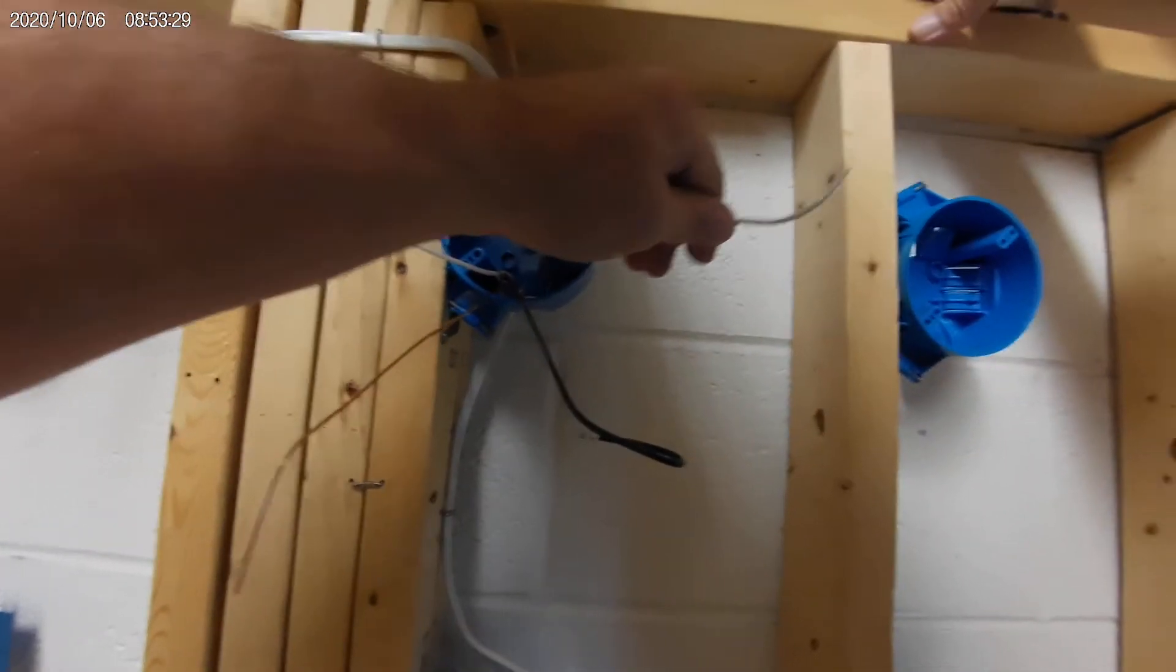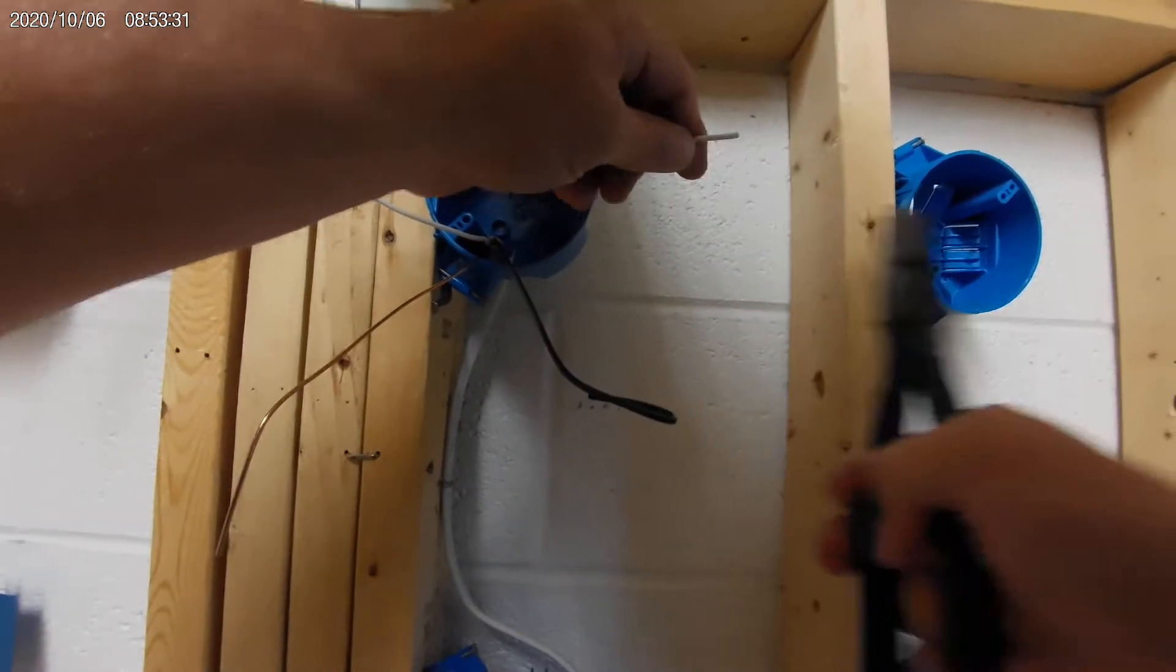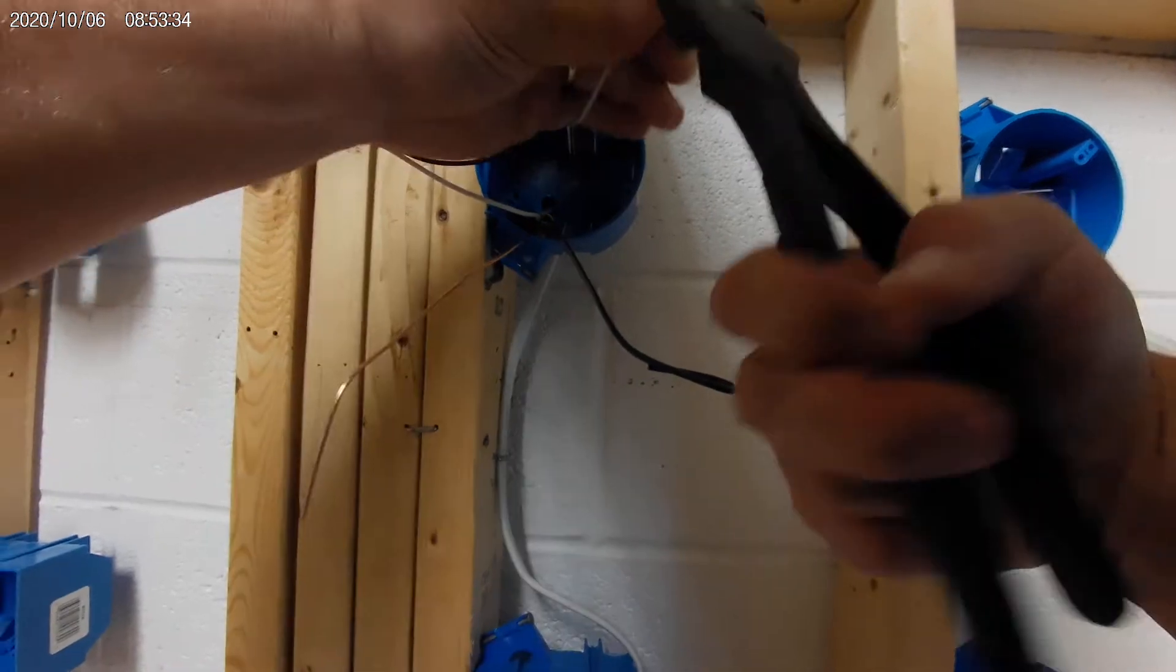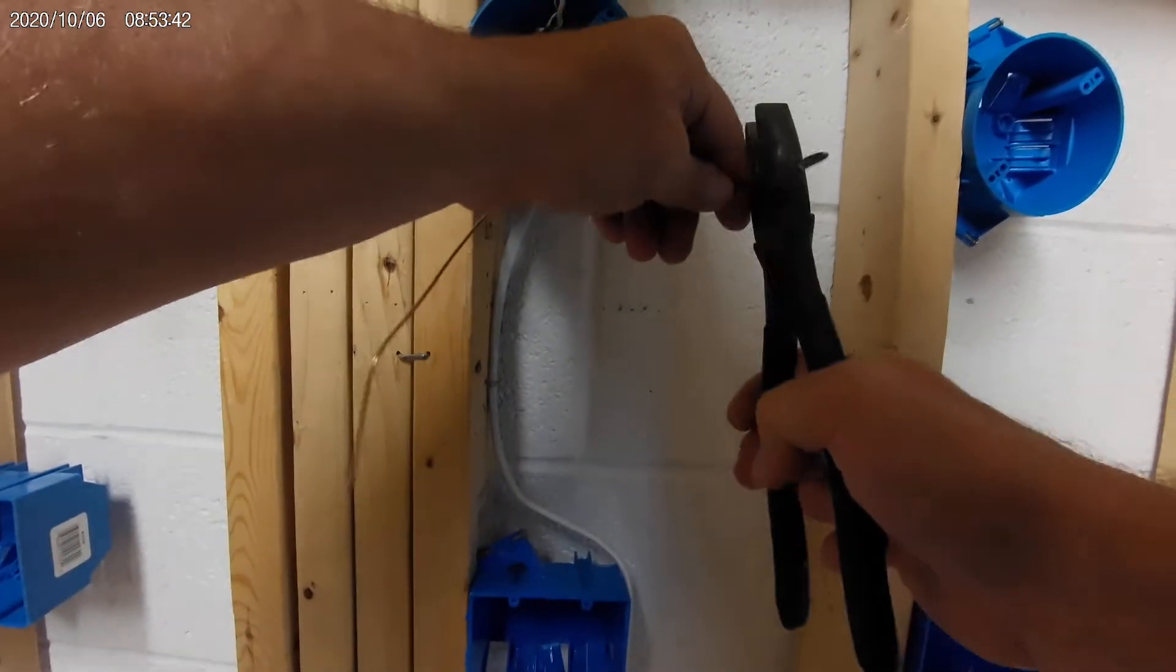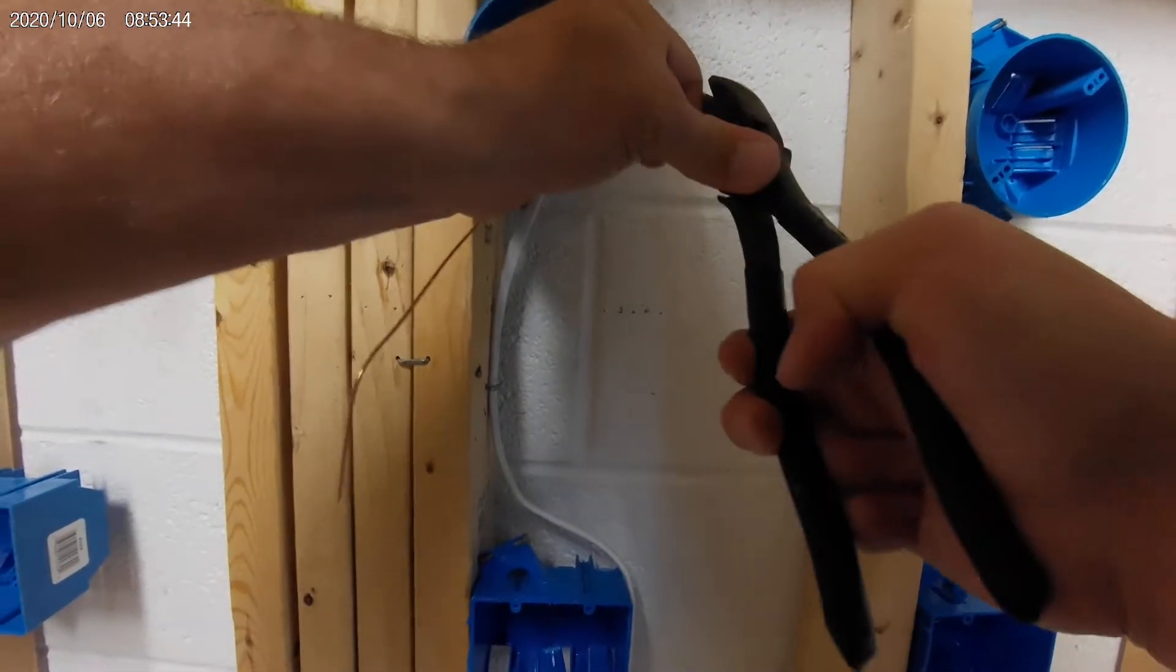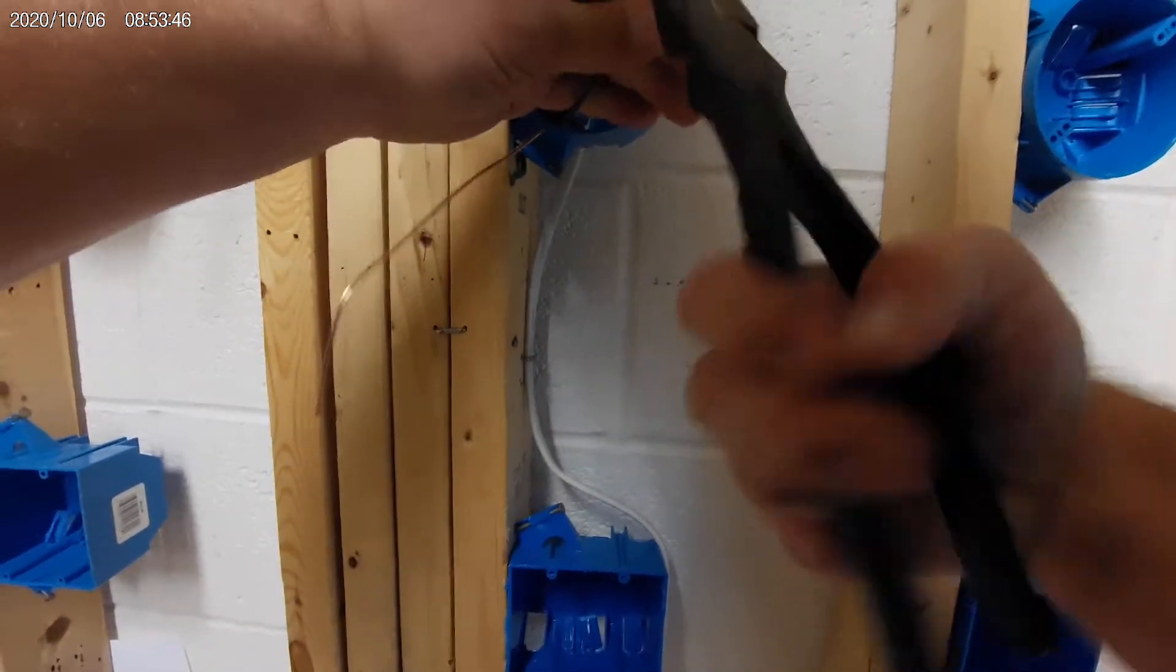So this was my neutral coming from the source. This is going to go directly onto my fixture. This is coming up from the switch. This is going to go onto my light. This is the loop.